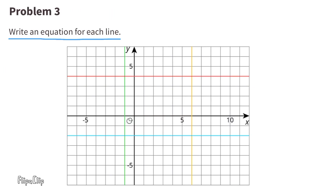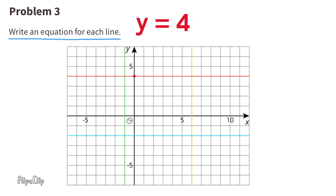Problem 3: Write an equation for each line. Let's start with the red horizontal line. Since this is a horizontal line without a positive or negative slope and the y-intercept is 4, I can write y equals 0 times x plus 4, or simply y equals 4. Because no matter where you are on this line, the y value will be 4.